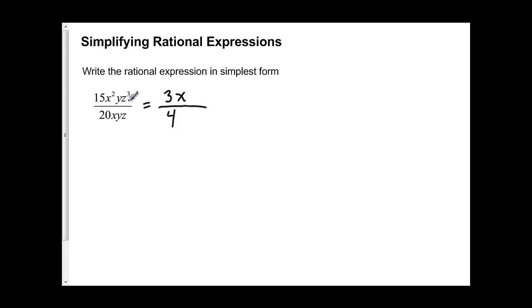And finally, we've got three z's on the top, z times z times z. We're going to divide out the z from the bottom. And on the top, we're going to be left with z squared.